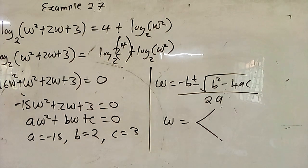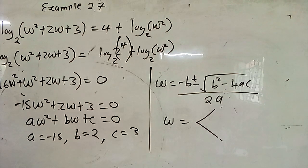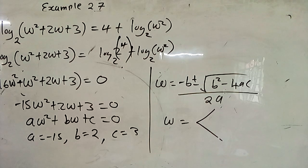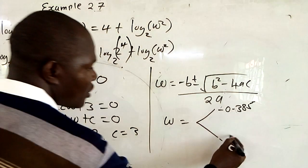Substitute the values of a, b, and c to get the two solutions of w. We have negative b — b is 2, so negative 2 — plus or minus square root of b squared, that is 4, minus 4 times negative 15 times c which is 3. Everything is over 2 times negative 15. The first solution from the calculator is negative 0.385, and the second solution using the minus sign gives positive 0.519.